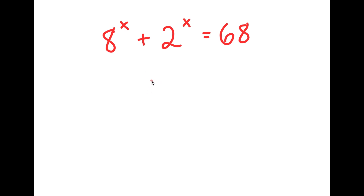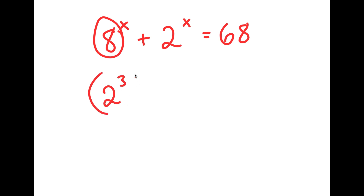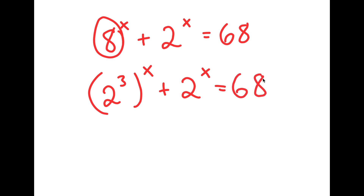In this problem, I have 8 to the power of x plus 2 to the power of x is equal to 68. I'm going to first start by rewriting 8 as 2 to the power of 3. So I get 2 to the power of 3 to the power of x plus 2 to the power of x is equal to 68.